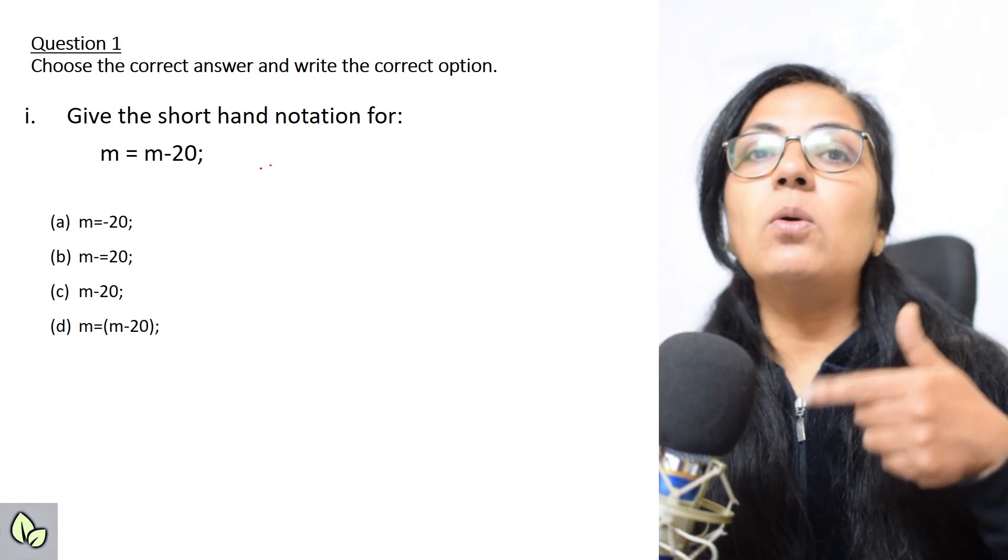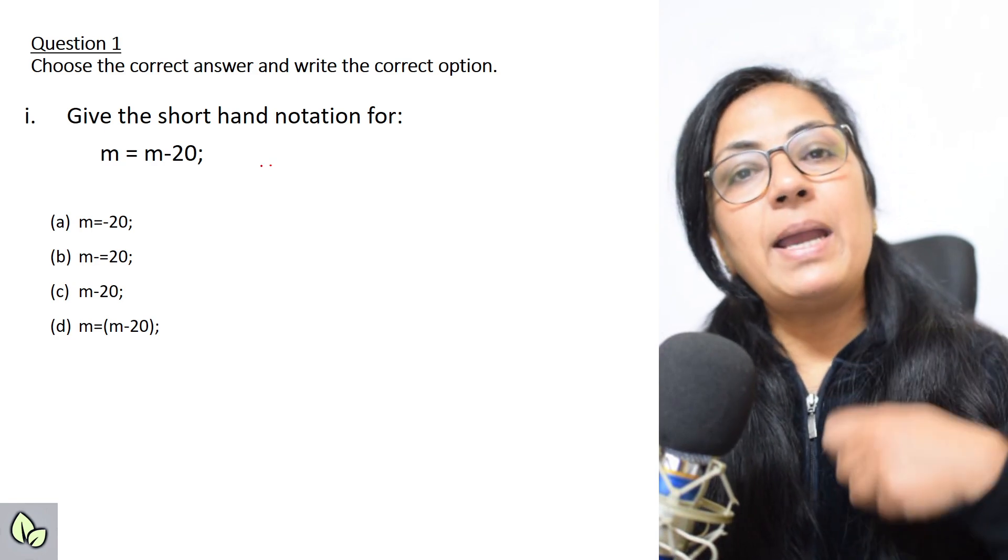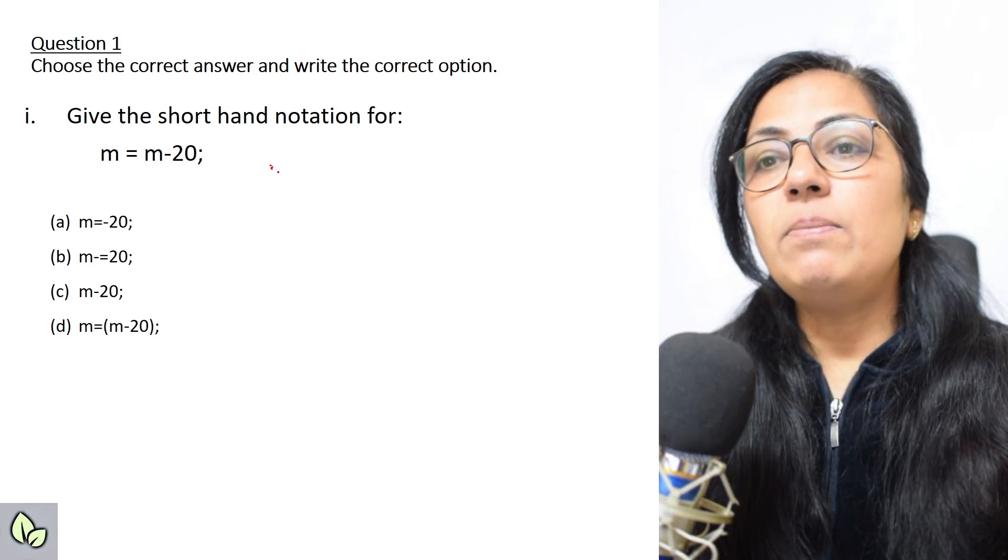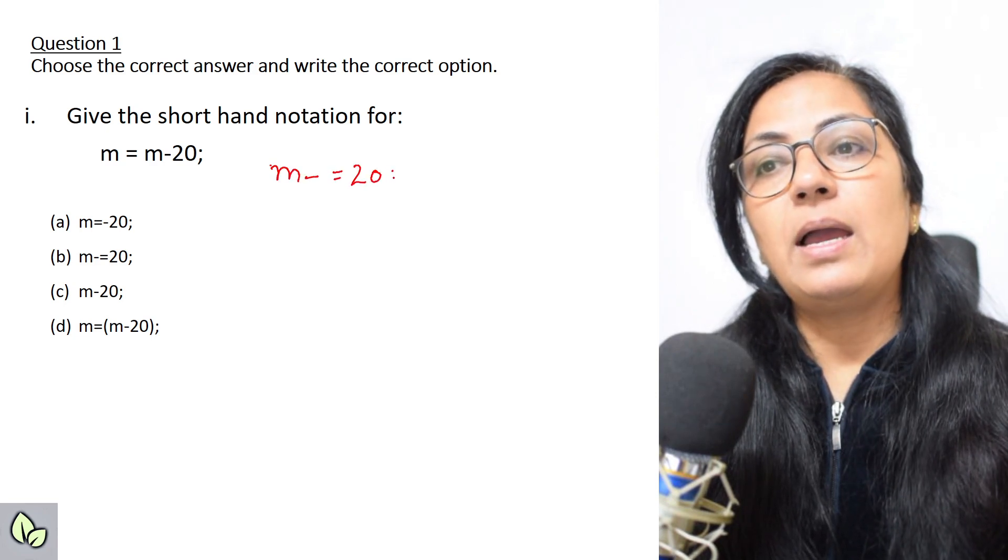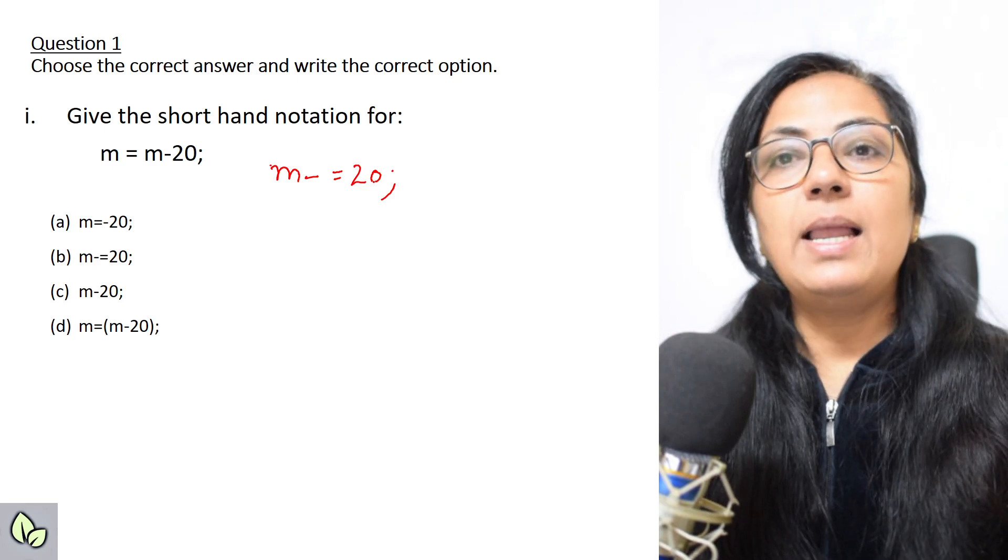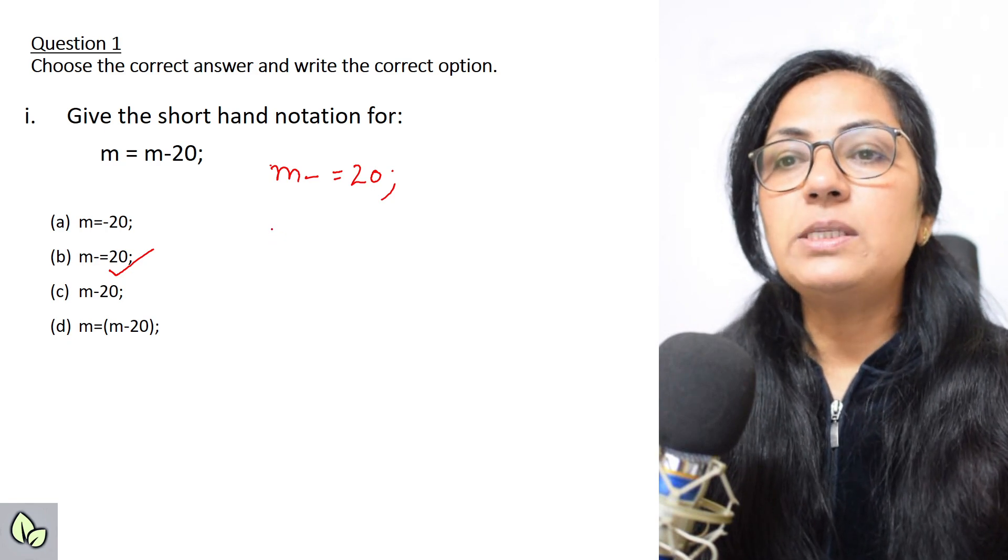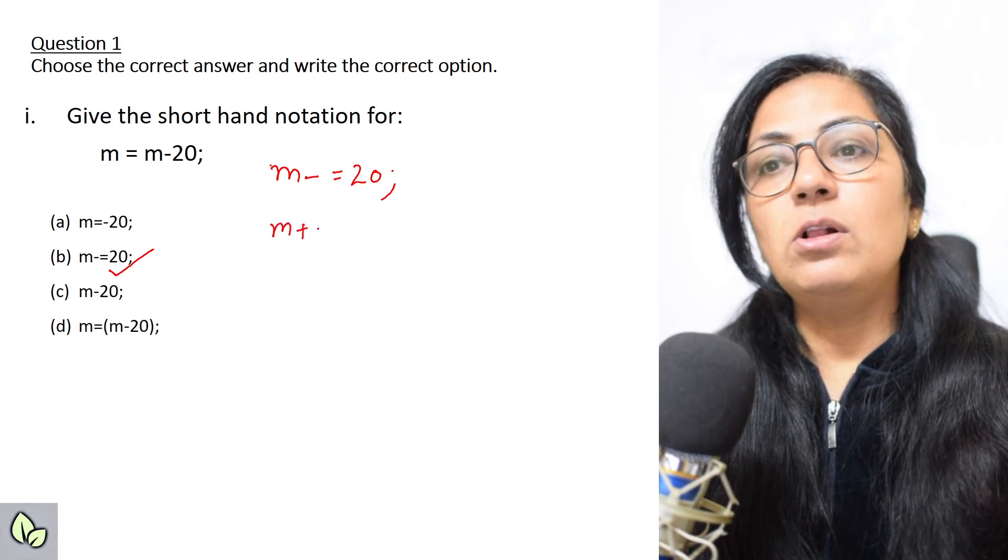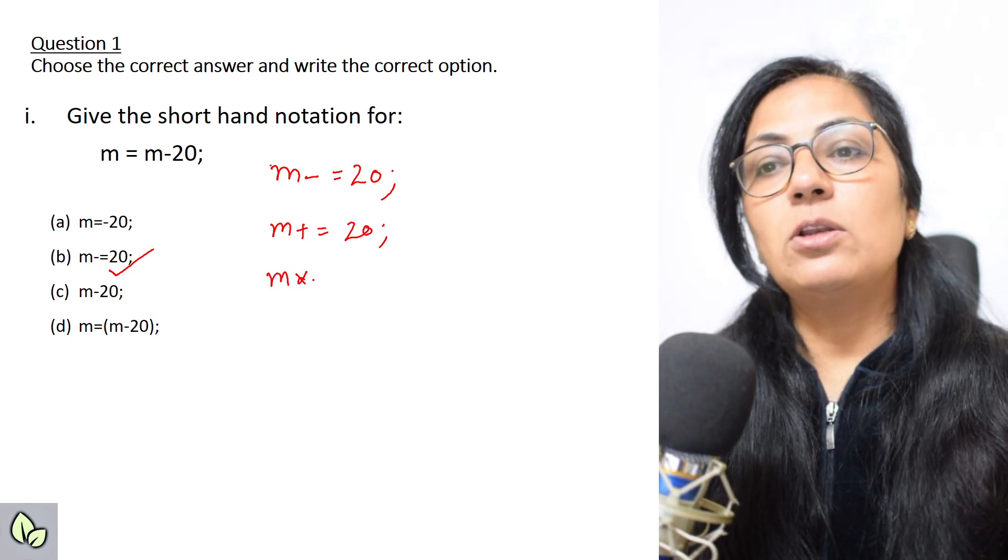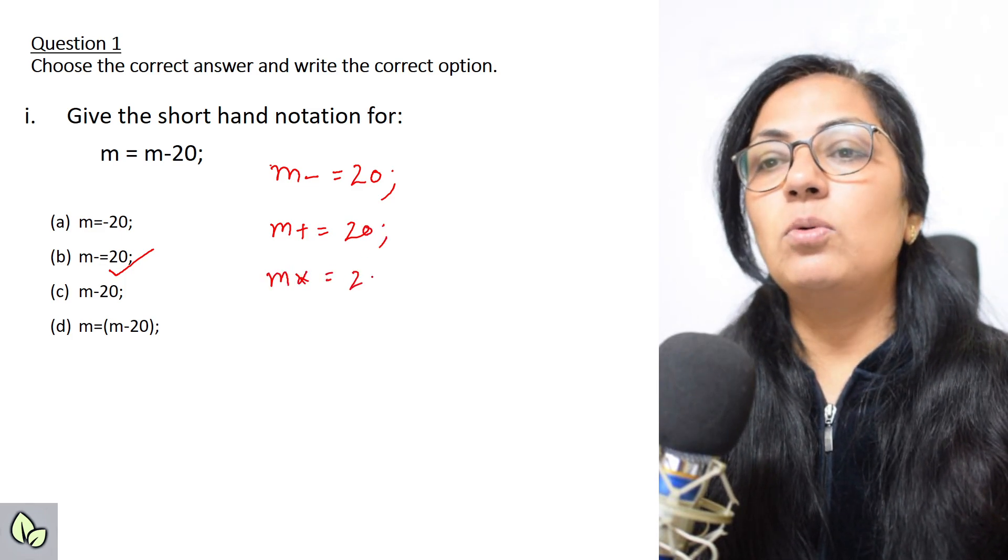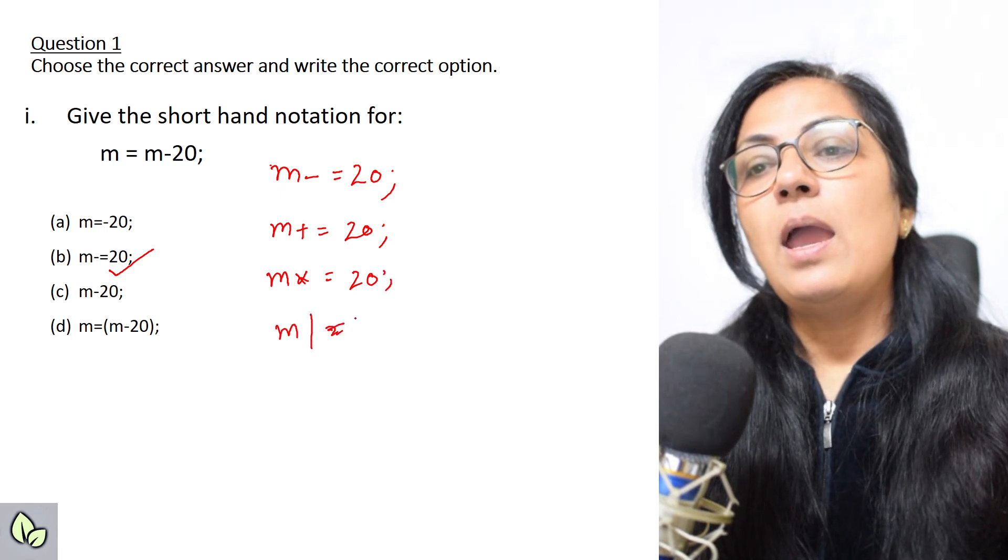For m equals m minus 20, that means we are going to update the present value of m minus 20, so this can be written as m minus equals 20 with a semicolon. For addition, it will be m plus equals 20. For multiplication, m asterisk equals 20. For division, m slash equals 20, and like this it is possible for all the mathematical operators.